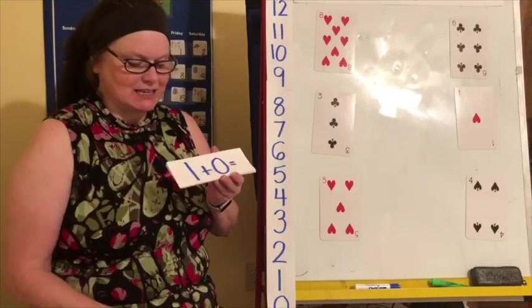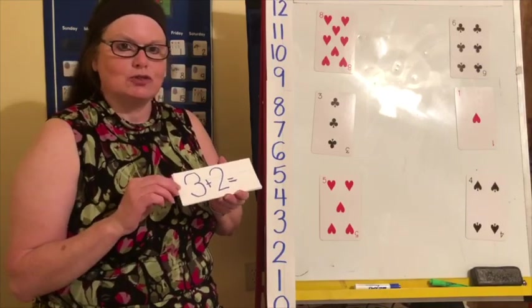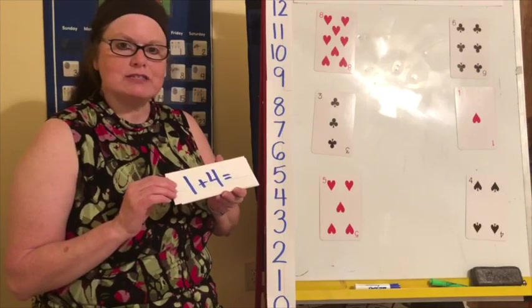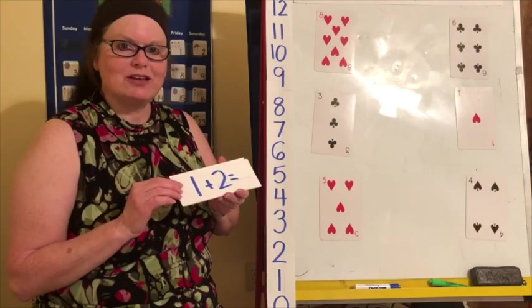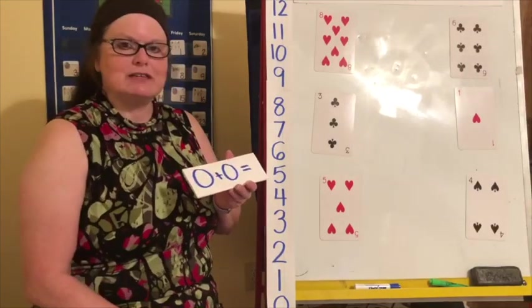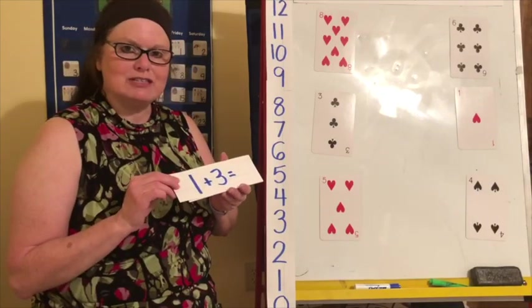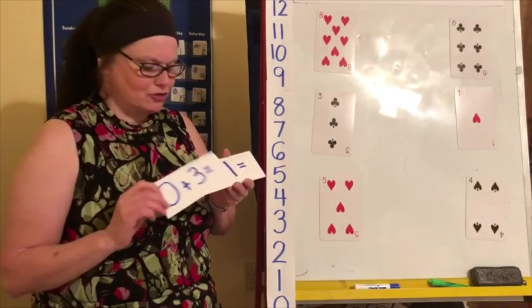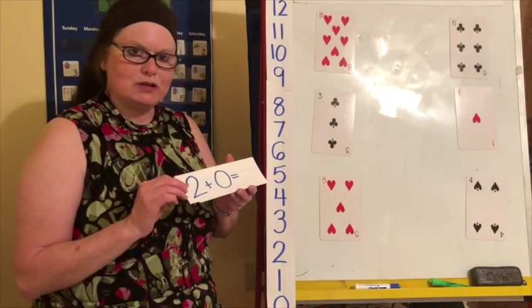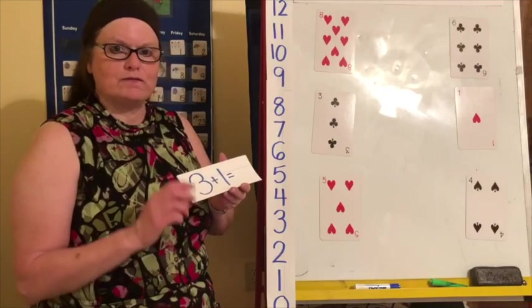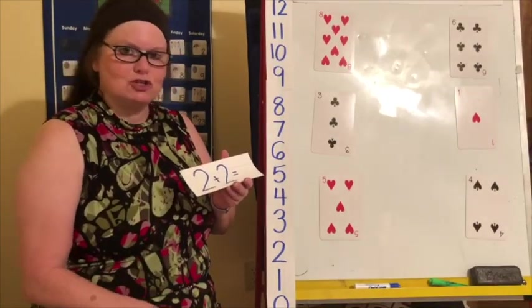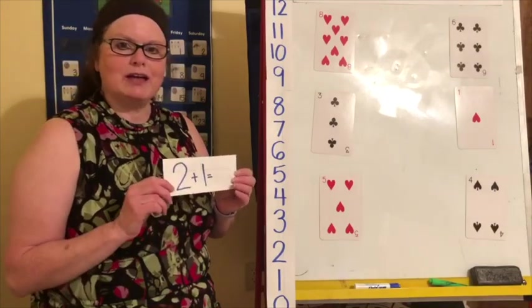One plus five equals six. One plus zero equals one. Three plus two equals five. One plus one equals two. One plus four equals five. One plus two equals three. Zero plus two equals two. Zero plus five equals five. Zero plus zero equals zero. One plus three equals four. Zero plus three equals three. Zero plus one equals one. Zero plus four equals four. Zero plus two equals two. Three plus one equals four. Three plus zero equals three. Two plus three equals five. Two plus two equals four. Two plus one equals three.